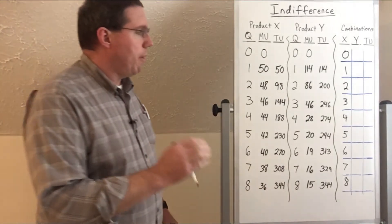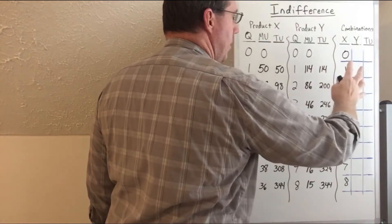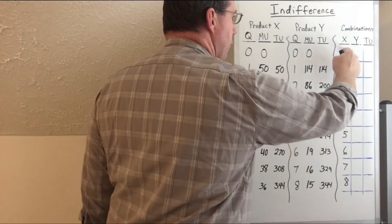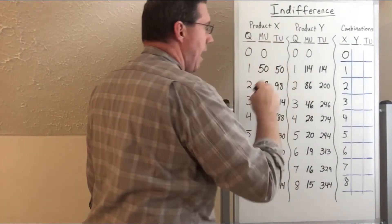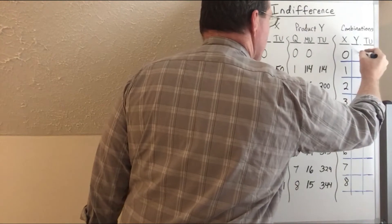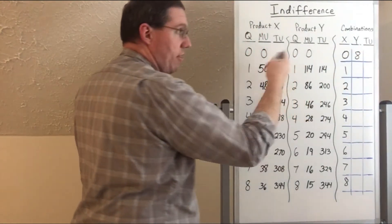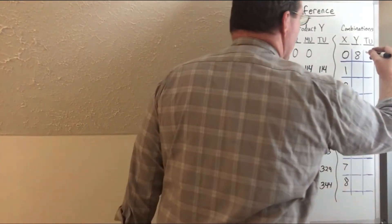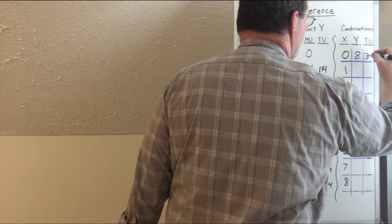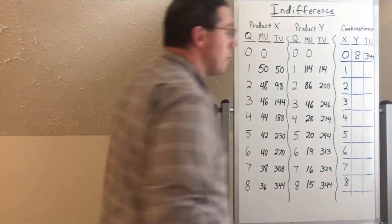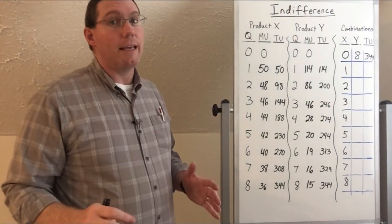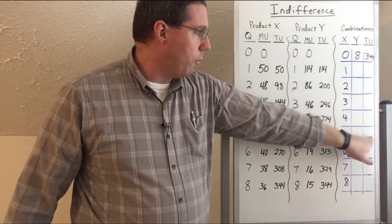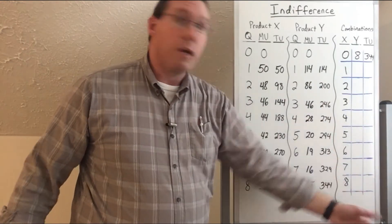Here's what we're going to do: we want to see how much utility this person would get from a mix of products. So let's make the first combination zero units of X and eight units of Y. From zero units of X they get zero utility; from eight units of Y they get 344 utility, so the total is 344. Since we're making an indifference table, this entire column all the way down is going to have to equal 344.